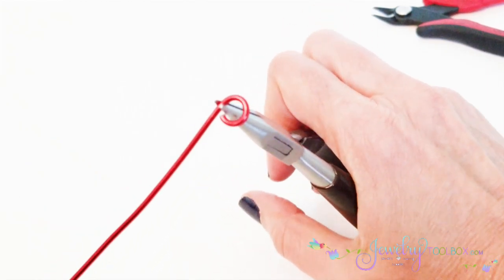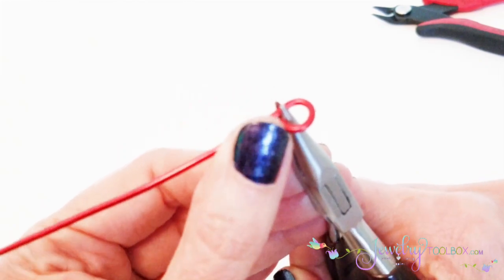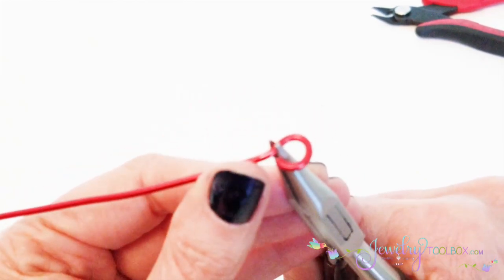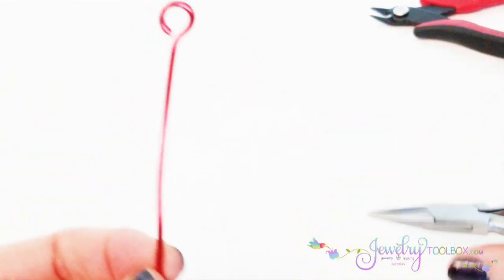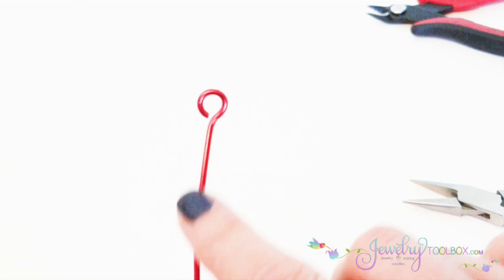And then just push it a little bit with my thumb to create a little bend. So now I have a little bend. And this loop is centered on that piece of wire.